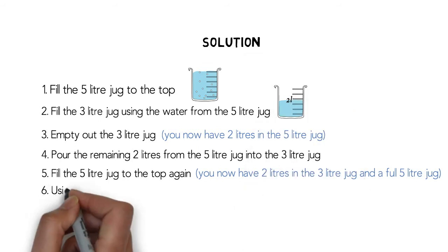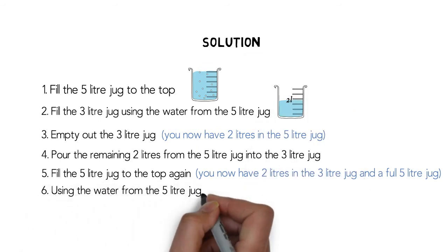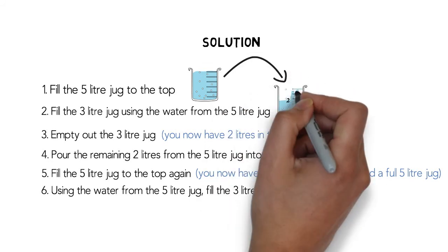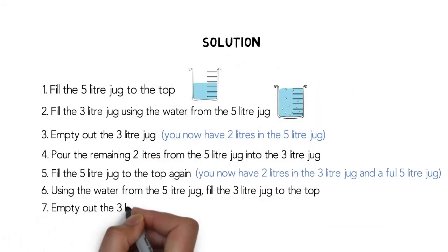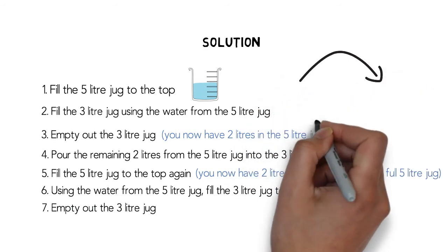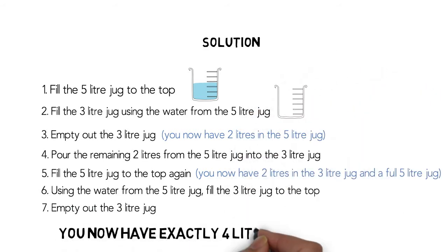Finally, pour water from the 5 litre jug into the 3 litre jug, filling the 3 litre jug until it is full. Empty the 3 litre jug. You now have exactly 4 litres in the 5 litre jug.